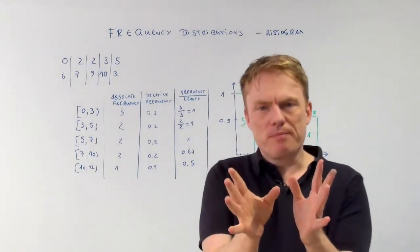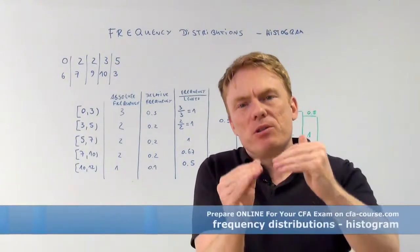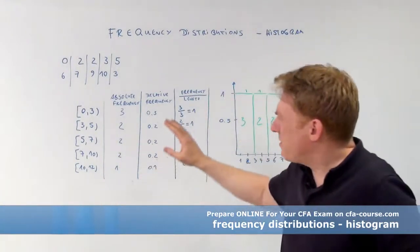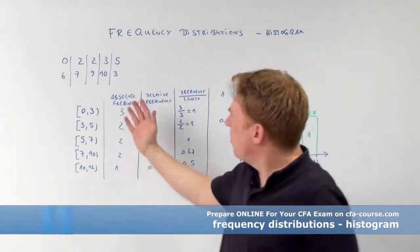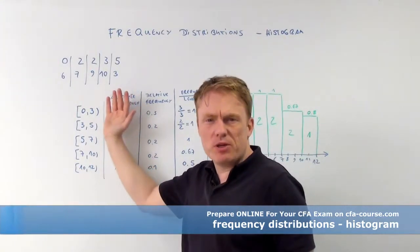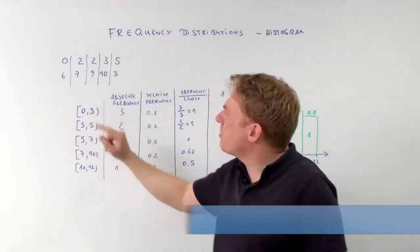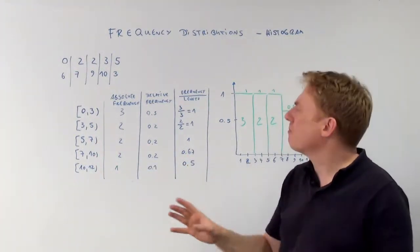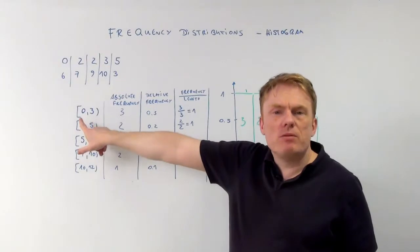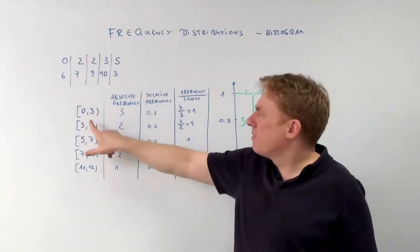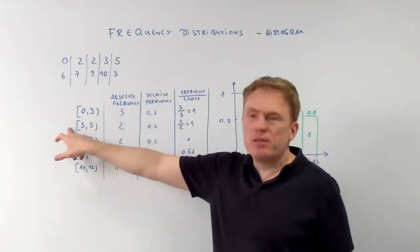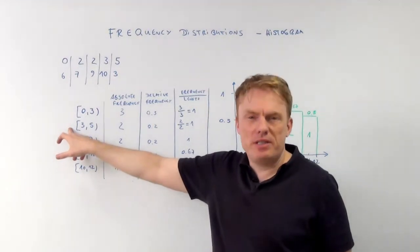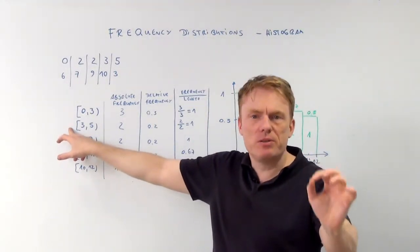Those are ungrouped data and we want to change them into grouped data, which means we want to put them into intervals from 0 to 3, from 3 to 5, from 5 to 7, and so on. Including 0, excluding 3. 3 is included in the second interval only, not included in the first one.